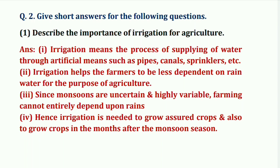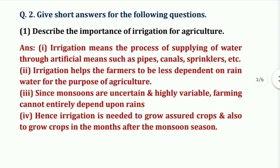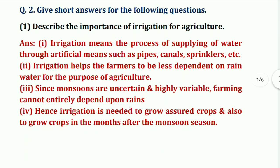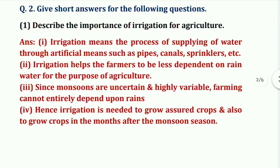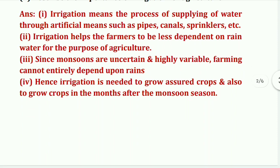Since monsoons are uncertain and highly variable, farming cannot entirely depend upon rains. Hence, irrigation is needed to grow assured crops and also to grow crops in the months after the monsoon season.